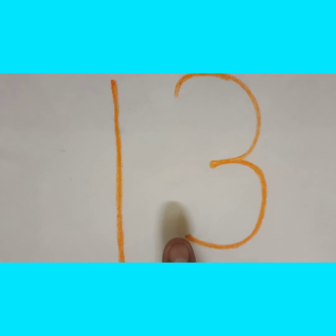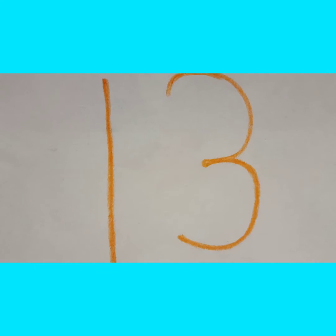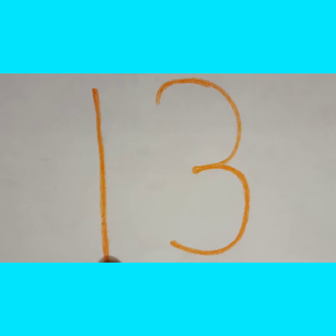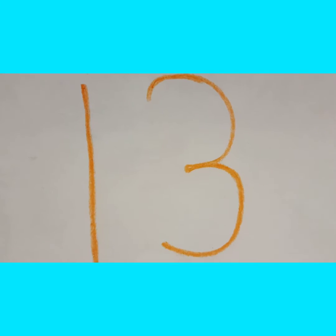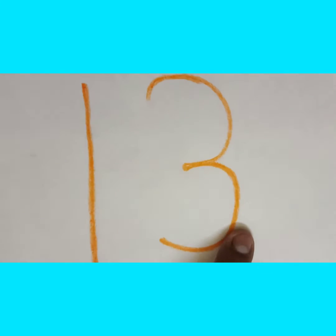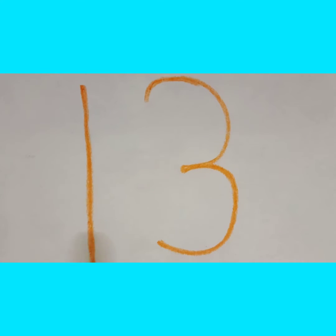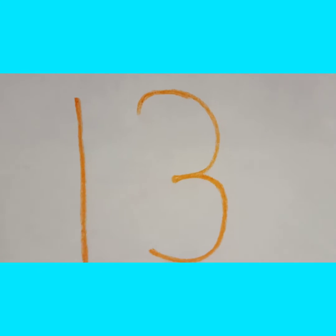Now let's start our math class. What is this? This is number 13, which comes after number 12. Take our index finger and draw a standing line, which is top to bottom — that makes number 1. Then draw a curve, then draw again a curve. Two curves together makes the number 3. So number 1 and number 3 together makes the number 13.